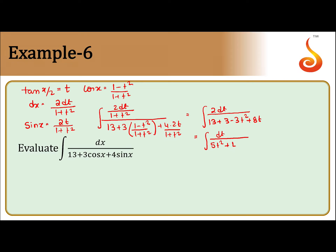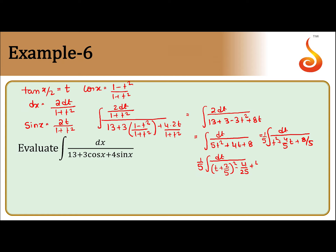This simplifies to dt/(5t² + 4t + 8), which can be written as (1/5)∫dt/(t² + (4/5)t + 8/5). We complete the square to get (1/5)∫dt/[(t + 2/5)² - 4/25 + 40/25], and since 8/5 = 40/25, we get (1/5)∫dt/[(t + 2/5)² + 36/25].